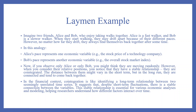The distance between them might vary in the short term, but in the long run they are connected and tend to come back together. In the financial context, co-integration is like identifying a long-term relationship between two seemingly unrelated time series. It suggests that despite short-term fluctuations, there is a stable connection between the variables. This stable relationship is essential for various economic analyses and modeling, helping researchers understand how different factors interact over time.